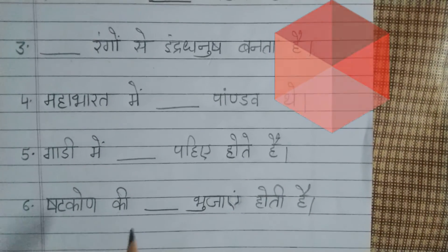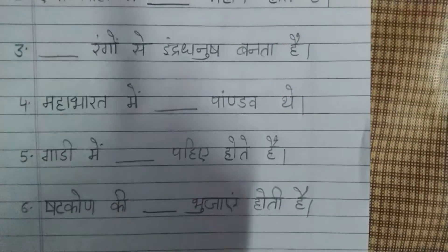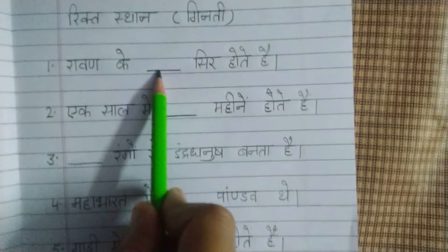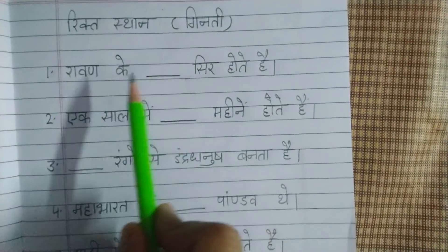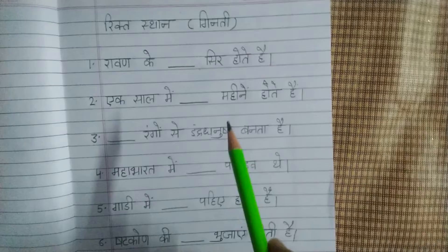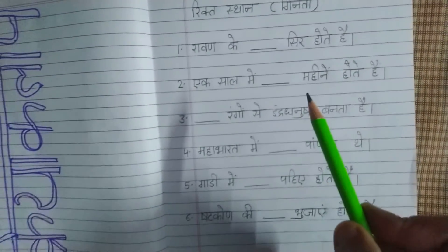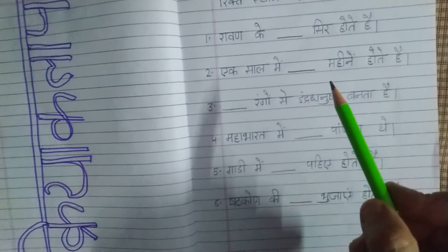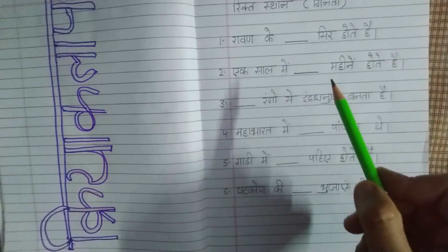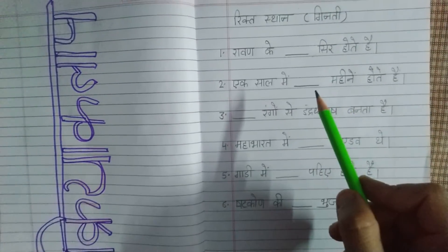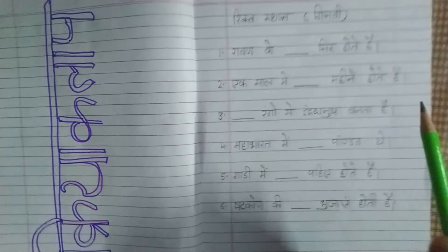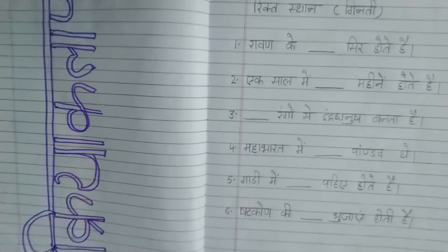Shatkon ki dash bujain hoti hain — sabne pada na? Shatkon mein kitni bujain hoti hain, nahi batayengi, yeh activity khud karni hai. Aur jo underline hai, usme aap crayons use kar sakte hain, otherwise color use nahi karna hai. Activity bahut sundar handwriting mein creatively karni hai. Okay class, very cool!